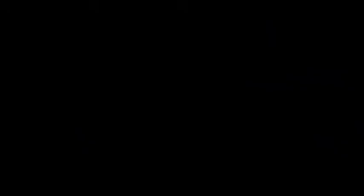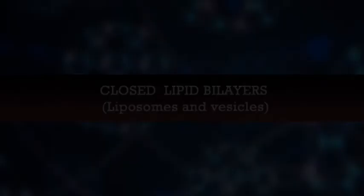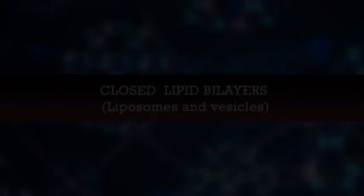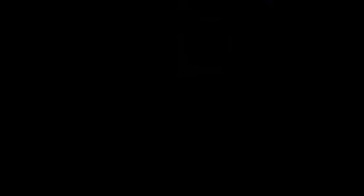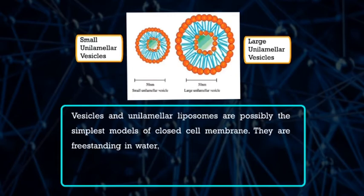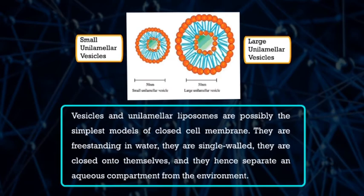Now let's look at the closed lipid bilayers — liposomes and vesicles. Liposomes or vesicles are widely used models of the lipid bilayer of biomembranes. The formation of liposomes was first reported by Bangham. They are formed from water dispersions of the lipids by various methods. Vesicles and unilamellar liposomes are possibly the simplest models of a closed cell membrane. They are free-standing in water, single-walled, closed onto themselves, and hence separate an aqueous compartment from the environment.